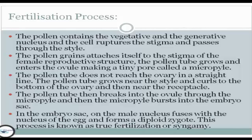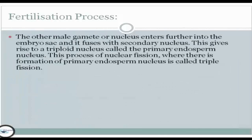In the embryo sac, one male nucleus fuses with the nucleus of the egg and forms a diploid zygote. This process is known as fertilization or syngamy. The other male nucleus enters further into the embryo sac and fuses with the secondary nucleus.